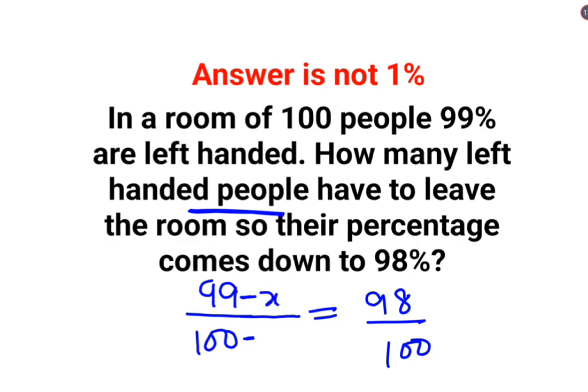Now when you reduce it from 99, so obviously it is getting reduced by total as well. And now all you have to do is just cross-multiply. 99 minus X, the whole multiplied by 100 is equal to 100 minus X, the whole multiplied by 98.